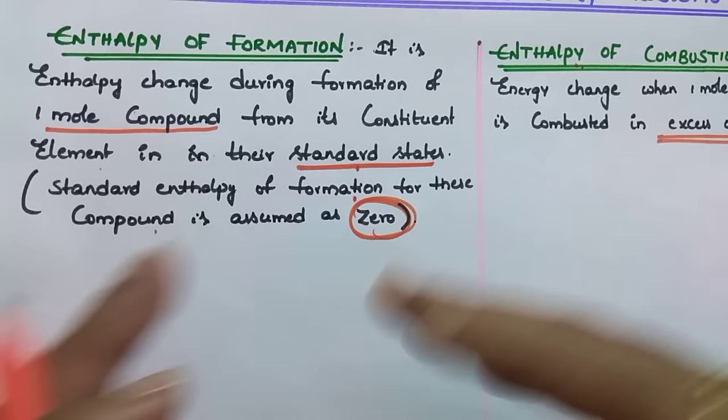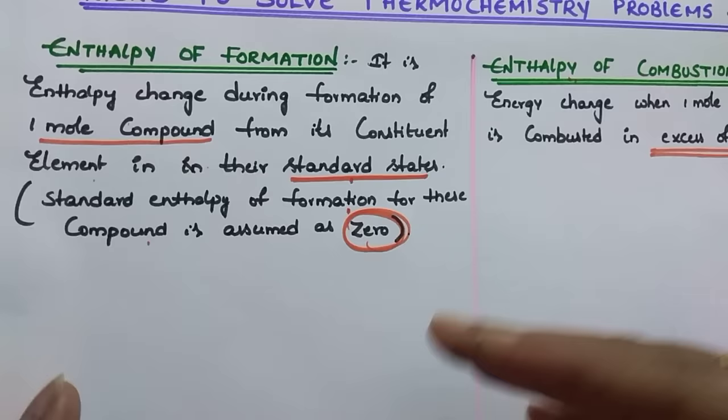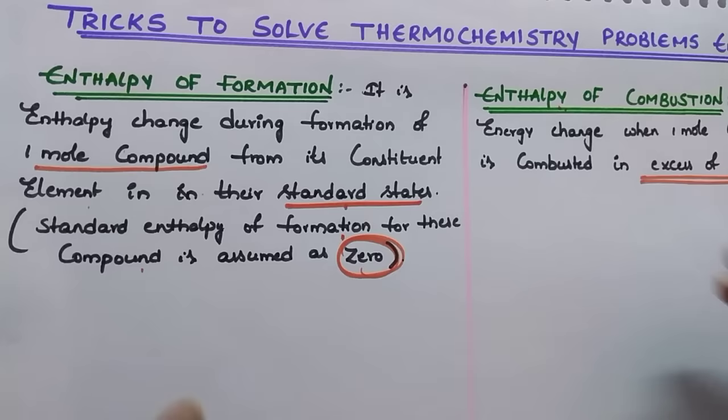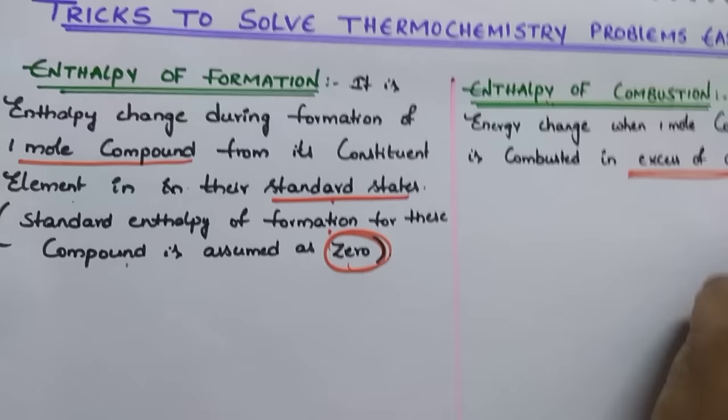What are standard states? Standard state is nothing but the presence of an element in its purest form in nature. For example, carbon present as graphite — this is the standard state compared to diamond, because carbon in the graphite state is thermodynamically more stable than diamond. That is why graphite is considered the standard state for carbon.